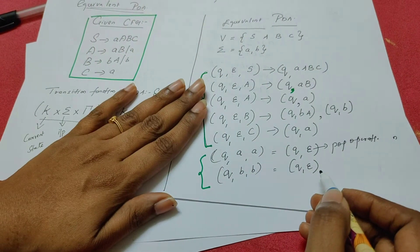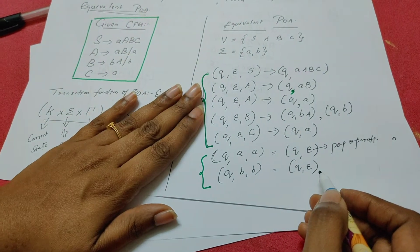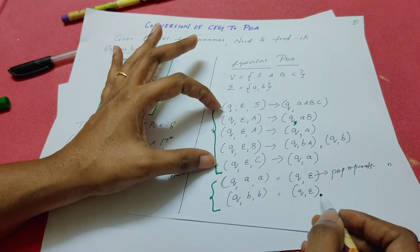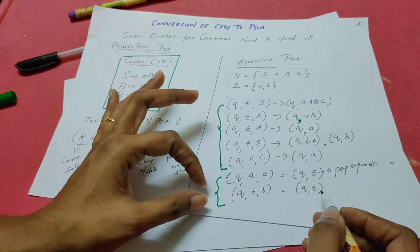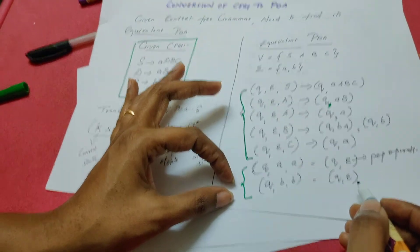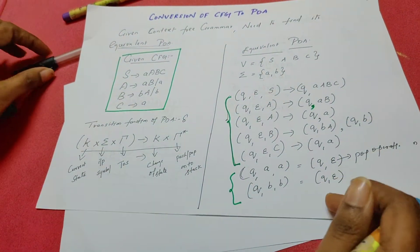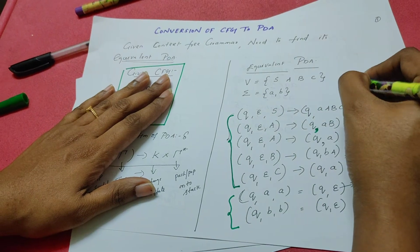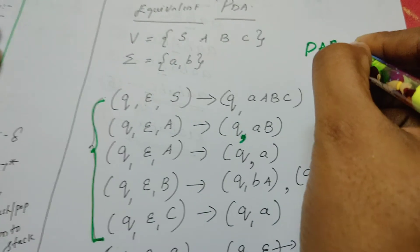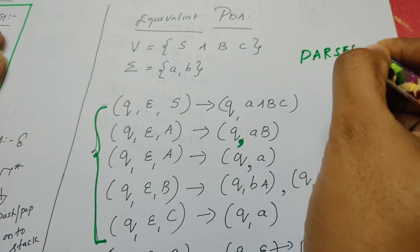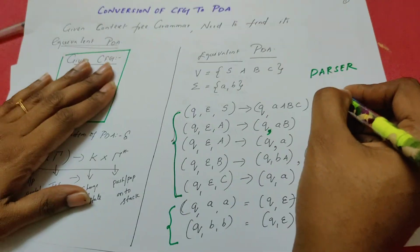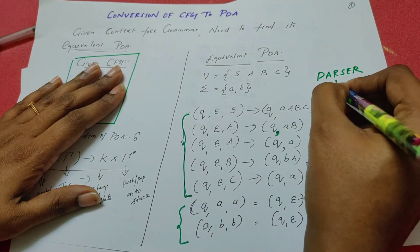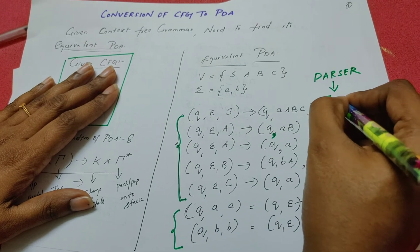This procedure is applicable for every grammar. For every variable, this is the format to write the transition rule, and for every terminal symbol, this is the format. This kind of PDA design is actually known as a parser, which has applications in the field of compiler design — especially, this is a top-down parser.